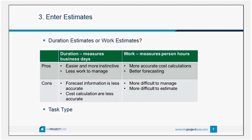Don't get too attached to your task types, because at one point or another when you're making revisions you'll likely need to change them based on how you want Project to recalculate values. One of the biggest complaints I hear: 'I remove a resource and my duration is suddenly a thousand days' or 'I change a duration and my resource is assigned at 500 percent.' That is entirely caused by task types. Master the task types and you'll eliminate a lot of headaches.